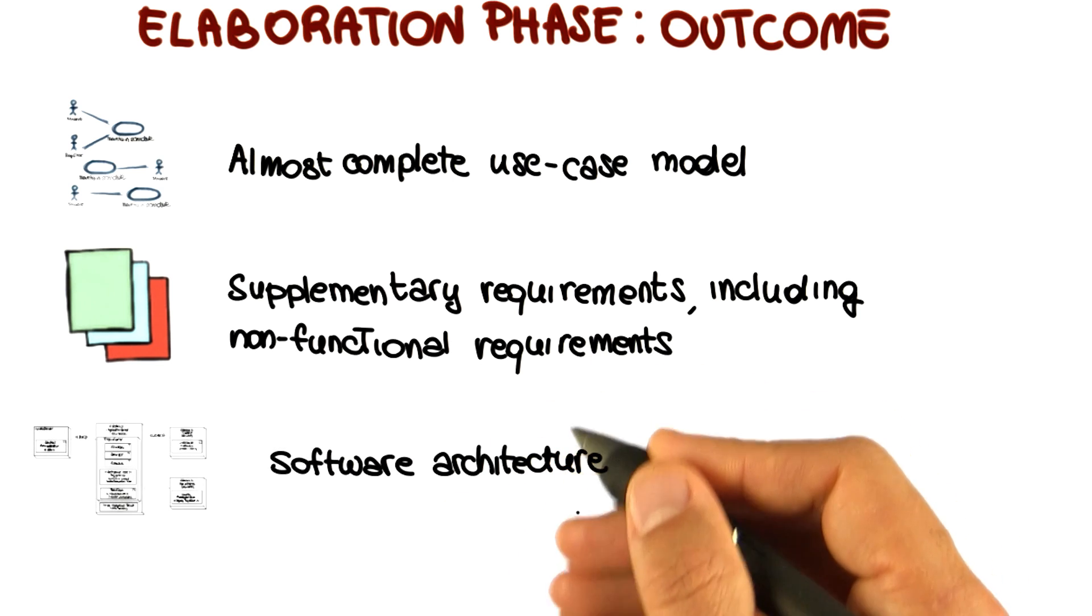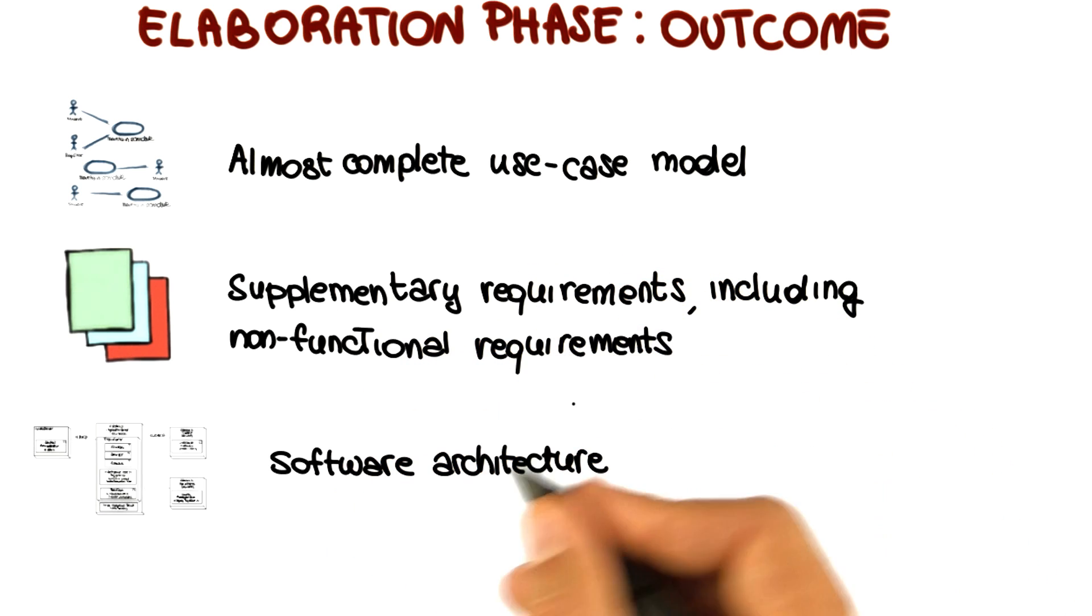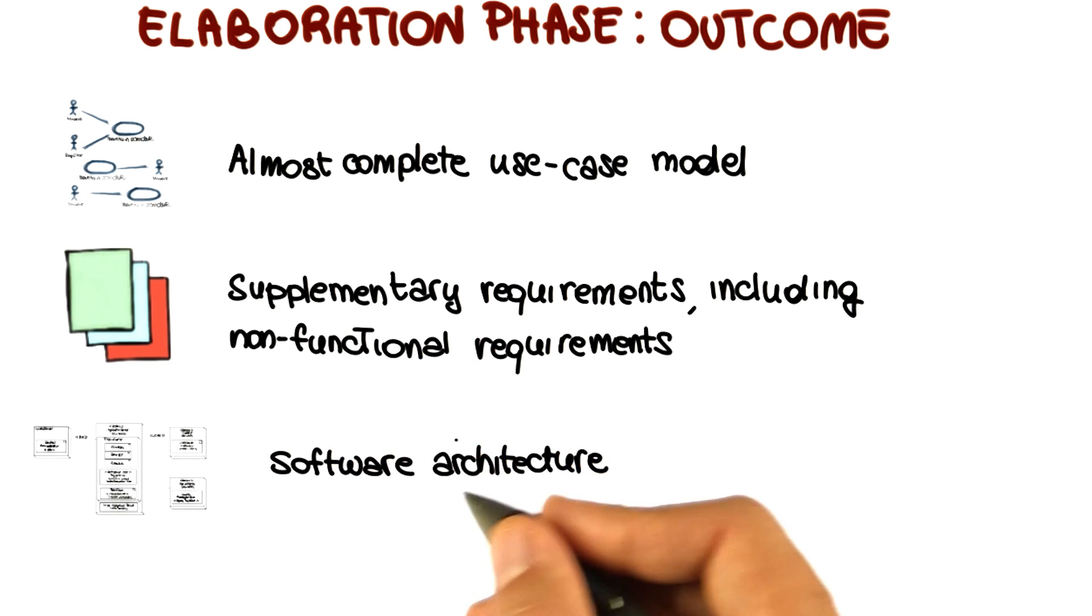We mentioned before that the software architecture is developed in an incremental way. It's not created at once. This is exactly what happens in the elaboration phase: we take the initial architecture that was defined in the inception phase and refine it until we get to a software architecture which is complete, and that is part of the deliverables for this phase.